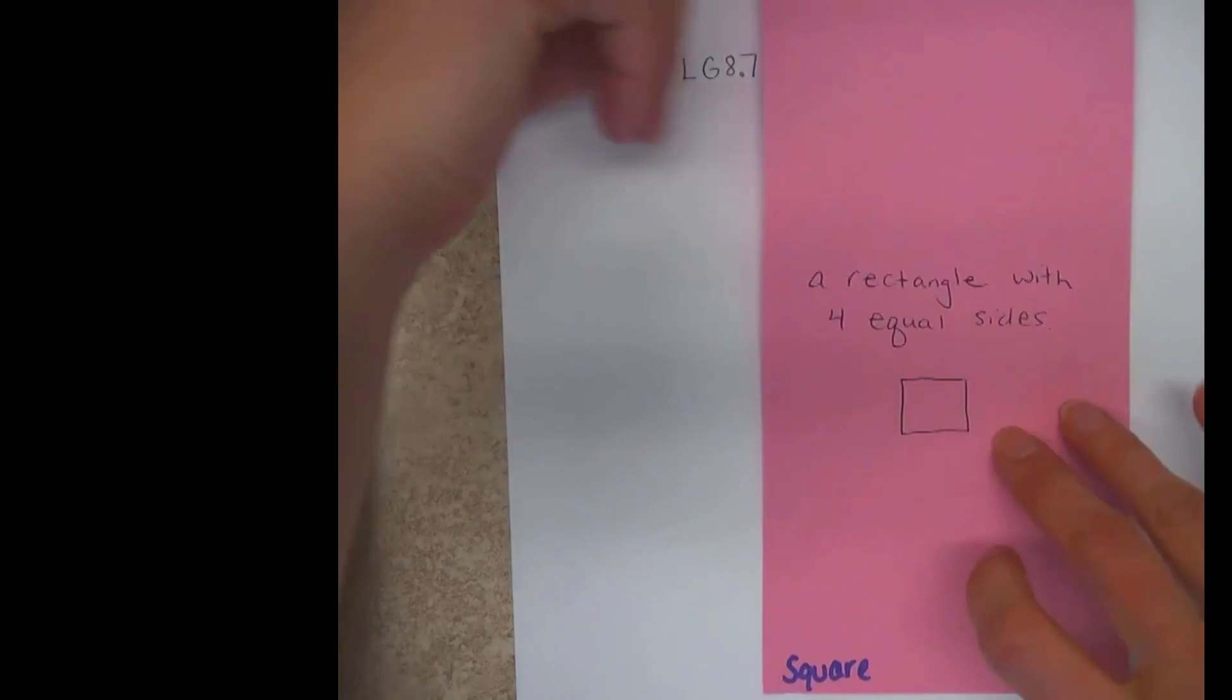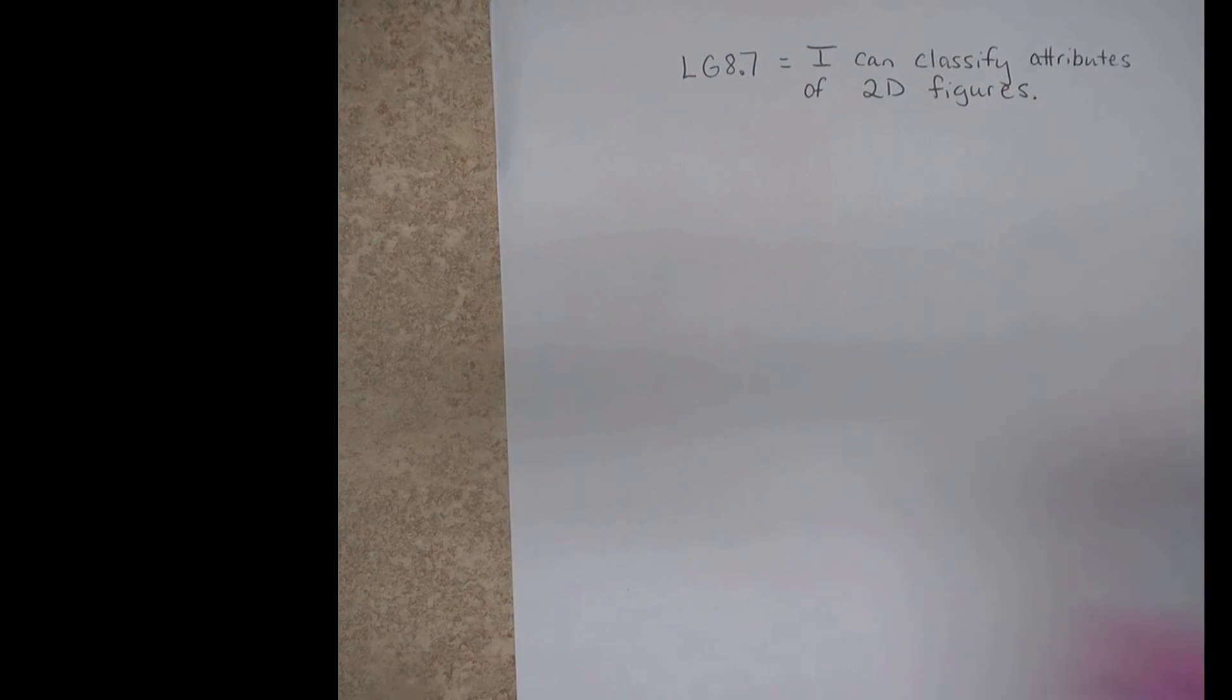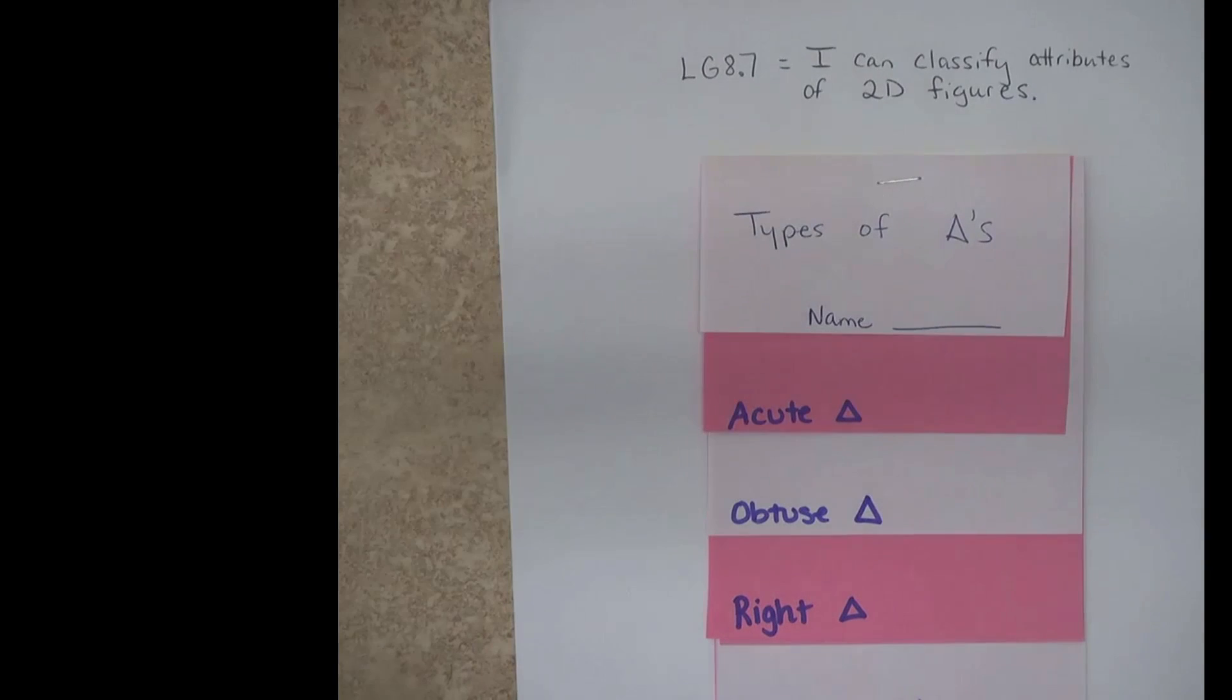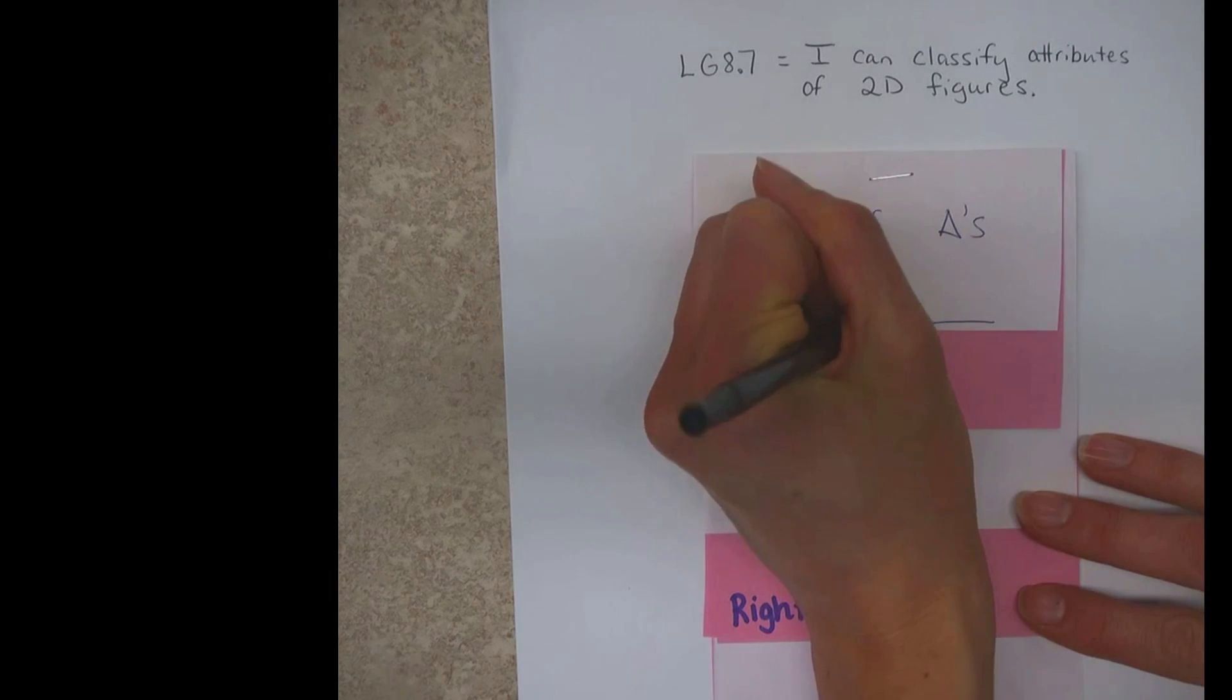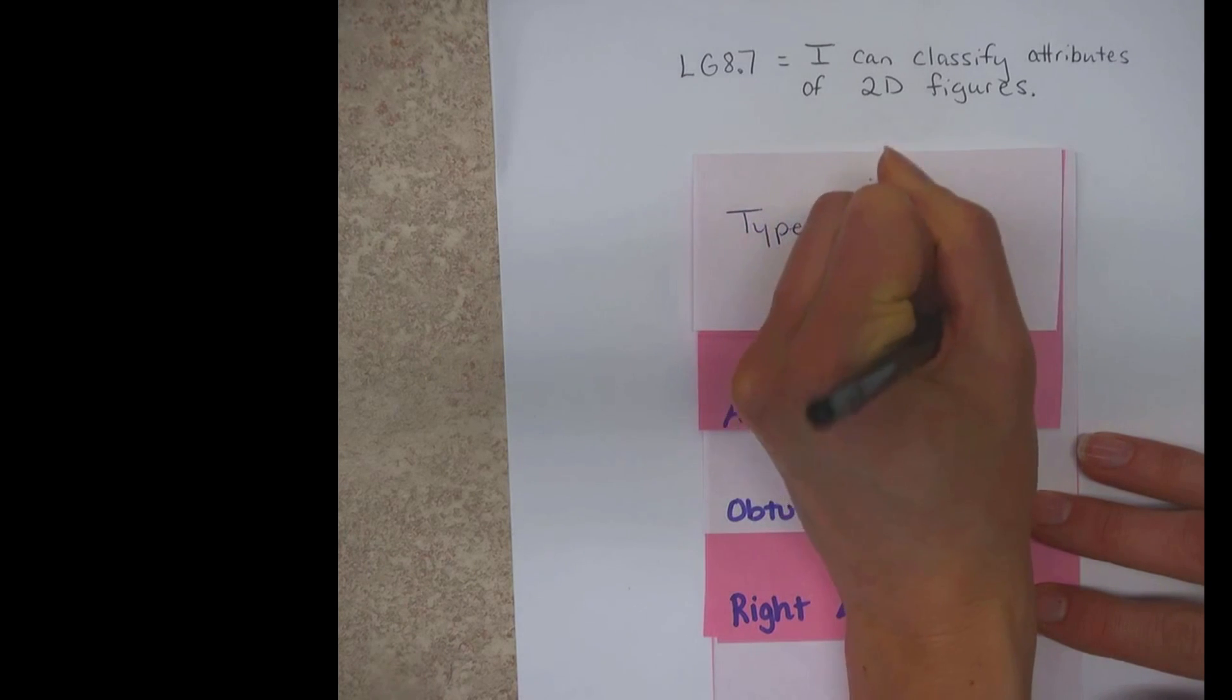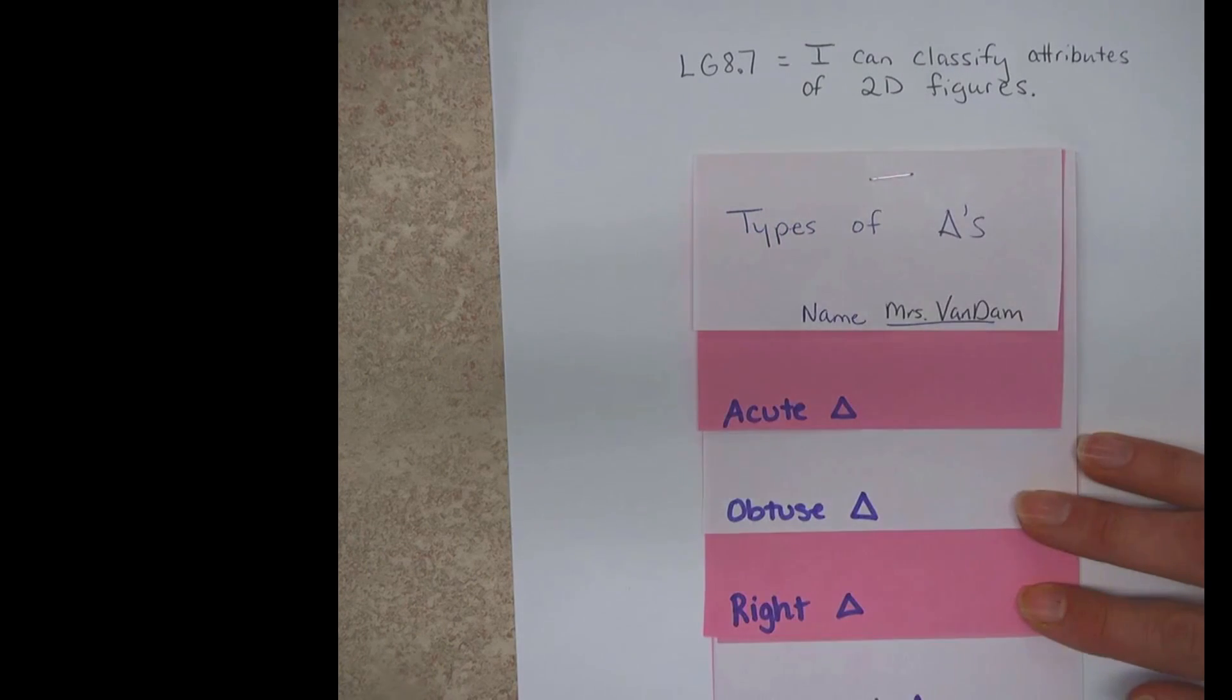You're going to take this one, put it off to the side, and get out your triangle. Voila. So go ahead and make sure that you've got your name on your triangle one too. Make sure you've got your name on all of them. Otherwise, they could get lost. You don't want that to happen.